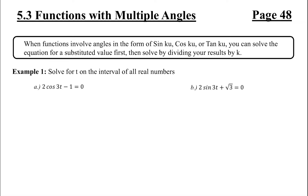Hey everybody, welcome to page 48. Today we're going to solve functions with multiple angles. What's going to happen basically is anytime you can see sine of ku, cosine of ku, or tangent of ku — in other words, anytime there is a variable or a value in front of our variable — something kind of funny is going to happen, so we got to be aware of those.